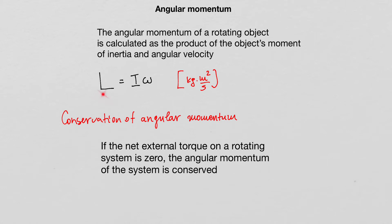Since the angular momentum is conserved due to very little friction — and ideally we can assume no friction — if the moment of inertia decreases, the angular velocity will increase. Or if the moment of inertia increases, then the angular velocity will decrease.